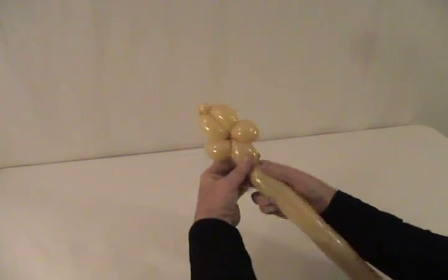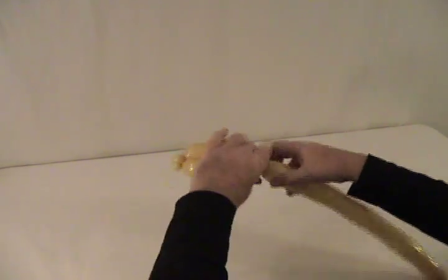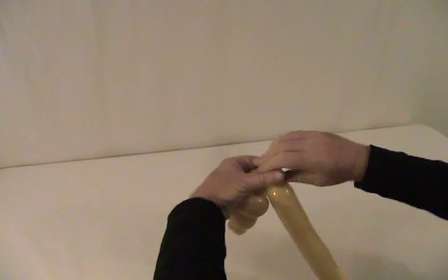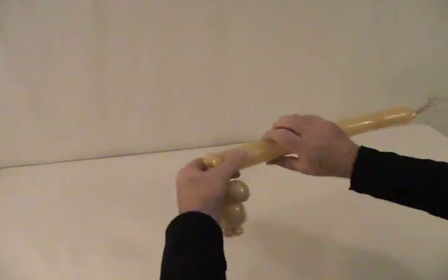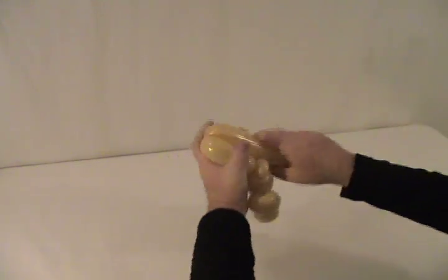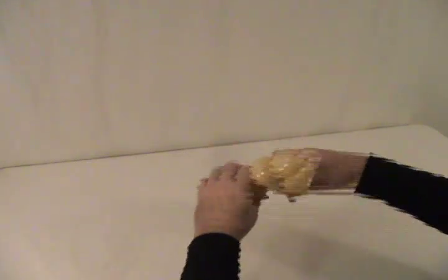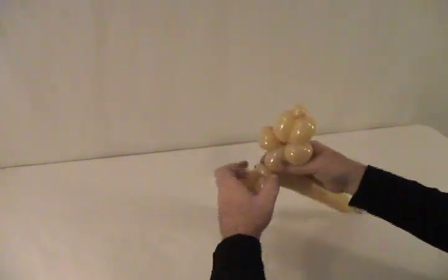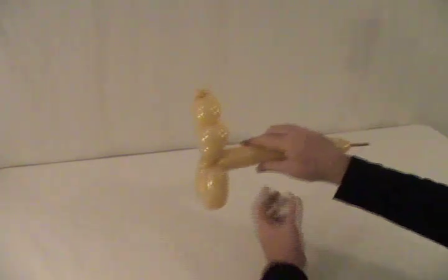We're going to give them about an inch to an inch and a half bubble for a neck, a pinch twist, and his two front legs about 2 and a half inches long. Lock that back into the pinch twist like that, and that pinch twist helps him stand up nice and straight.